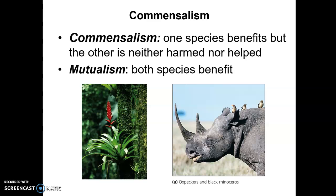The example on the left is commensalism — that's a bromeliad. It's similar to an orchid and it grows high up in trees, which allows it to get water since it doesn't have true roots and gives it some protection. The bromeliad benefits, but it doesn't harm or help the tree in which it resides.